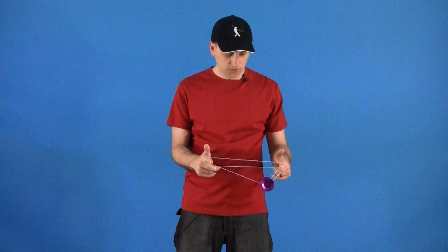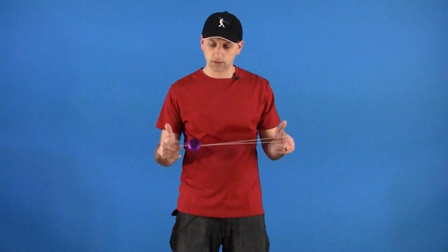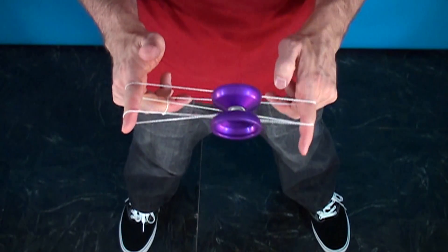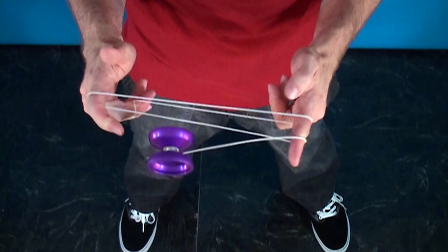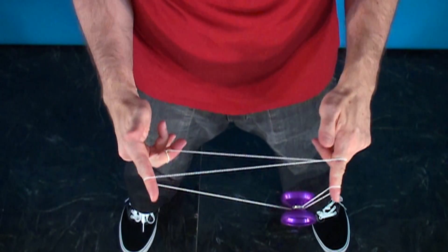The reason why you want to do that is because the strings are going to be spread apart just a little bit further when you do that. When you are doing Black Hops you want to make sure that you are always landing on just the outside string.